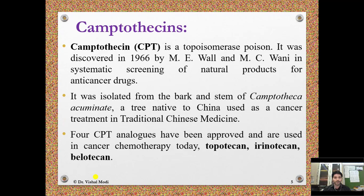The first class is camptothecins, also known as CPT. It is a topoisomerase poison discovered in 1966 by Wall and Wani during systematic screening of natural products for anti-cancer drugs. It was isolated from the bark and stem of Camptotheca acuminata, a tree native to China, used as a cancer treatment in traditional Chinese medicine.